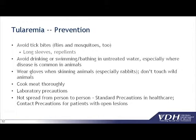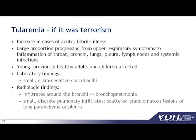This is another agent we're happy to say is not spread from person to person — standard precautions are sufficient, but if somebody has lesions, contact precautions should also be used. If it was terrorism, we would see people with acute febrile illness with fevers and aches, a number progressing to more serious upper respiratory symptoms and inflammation, since aerosolized dispersal would be the expected route. Lab findings of gram-negative coccobacilli and special x-ray findings with infiltrates around the bronchi would be seen.